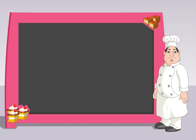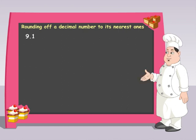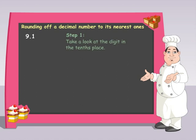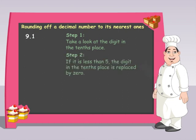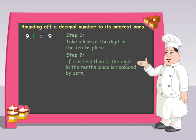So you want to round off a decimal number to its nearest ones. How about 9.1? The first thing you need to do is to take a look at the digit in the tenths place. If it is less than 5, the digit in the ones place remains the same and the digit in the tenths place is replaced by 0. So 9.1 is rounded off to 9.